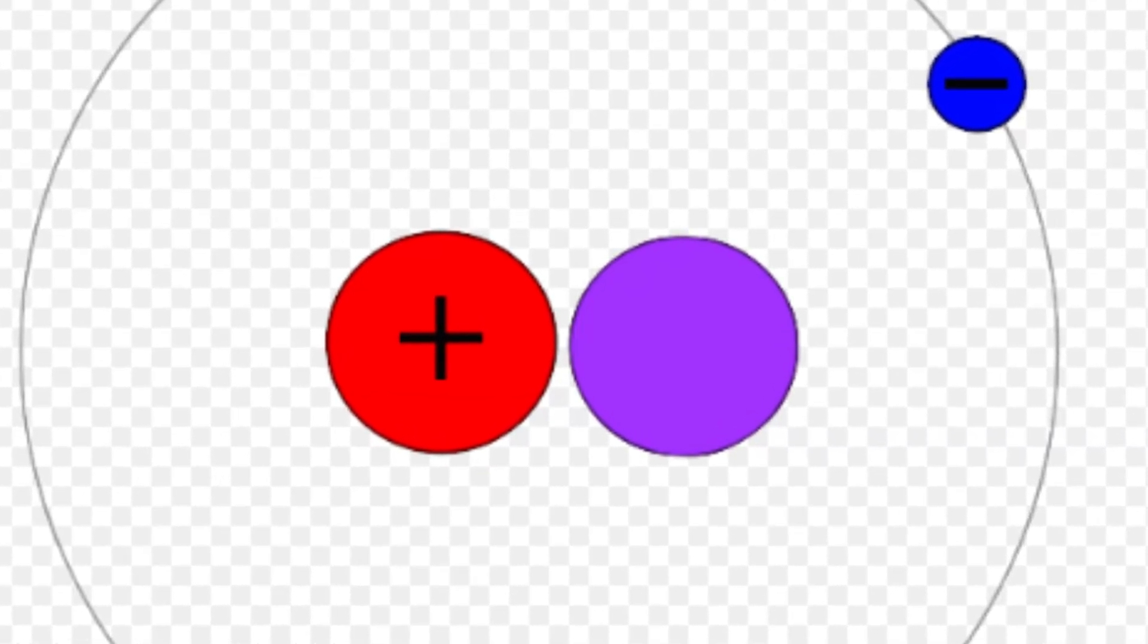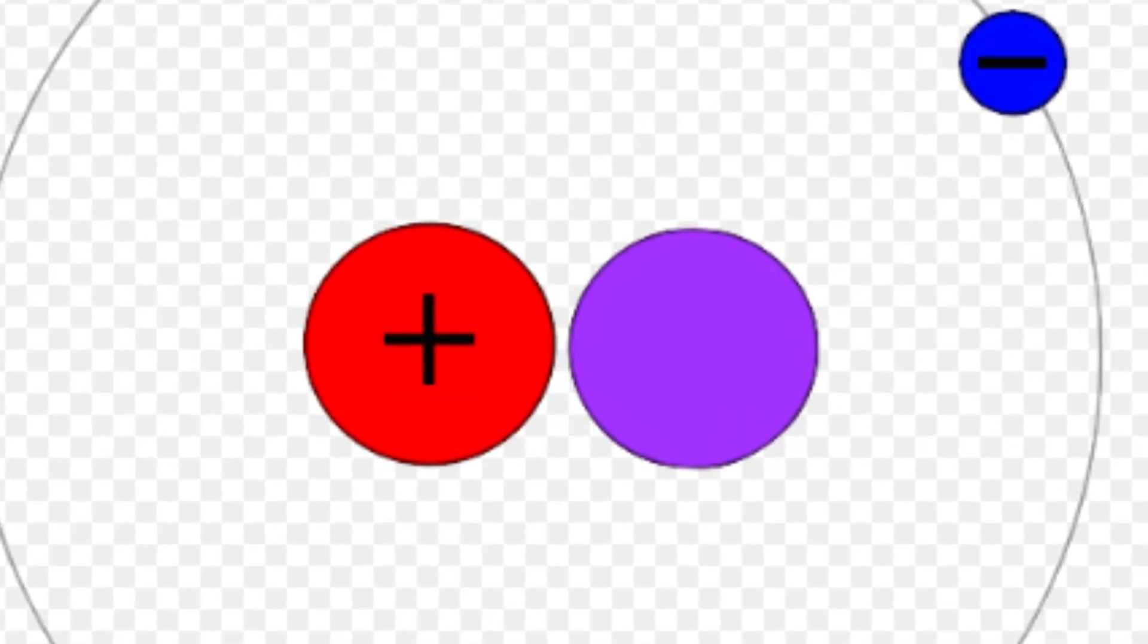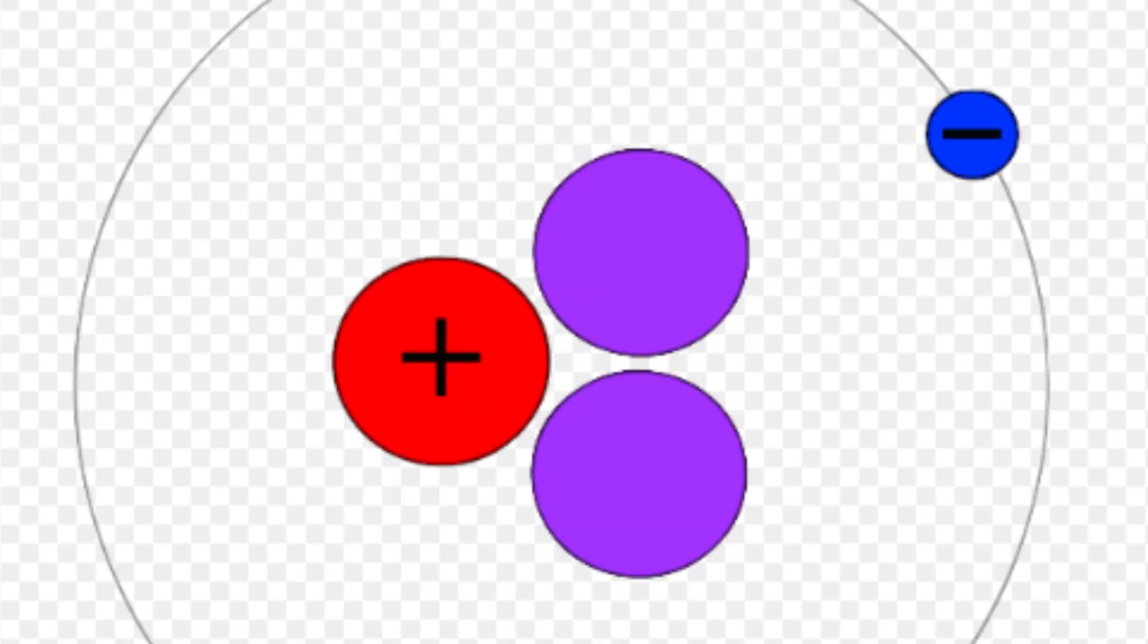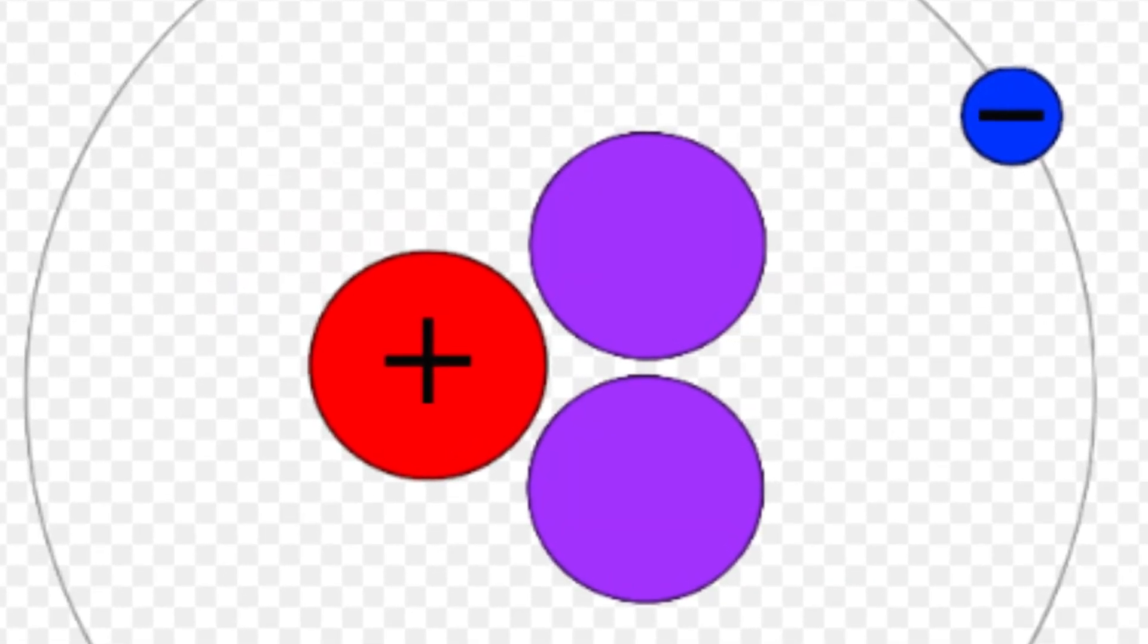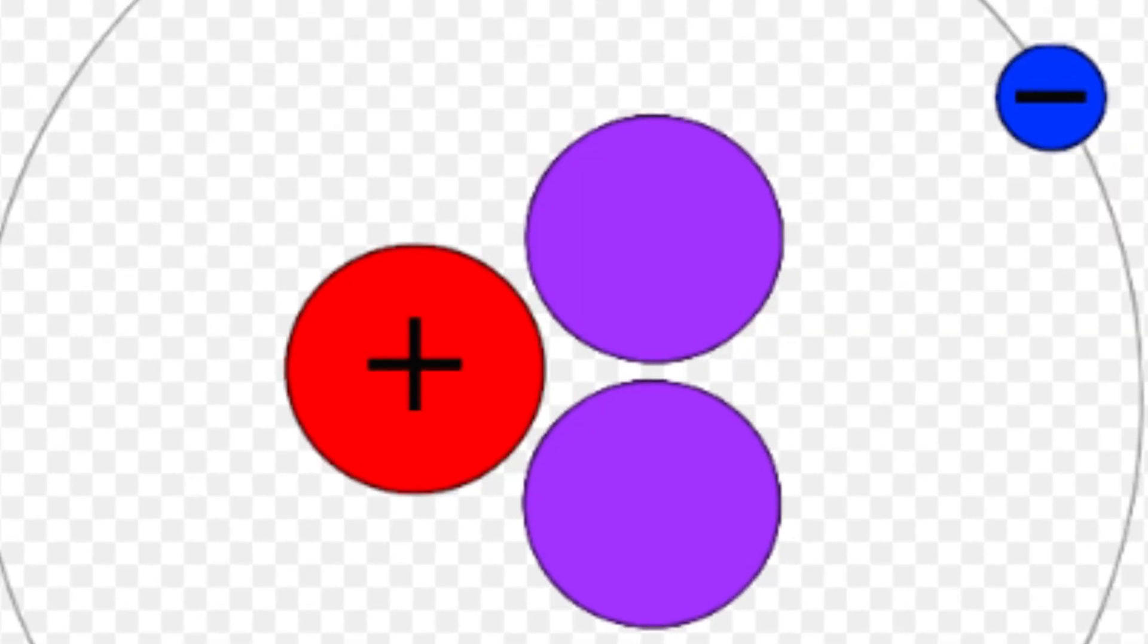Most people know about deuterium, which is hydrogen with one neutron, and tritium, which has two neutrons. These isotopes are stable enough to use in real-life applications like nuclear fusion and heavy water reactors.